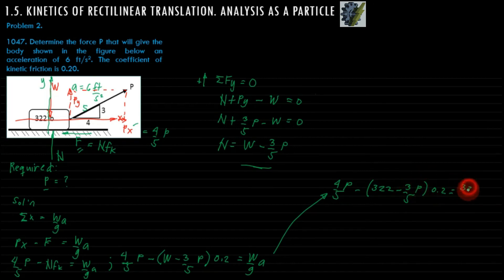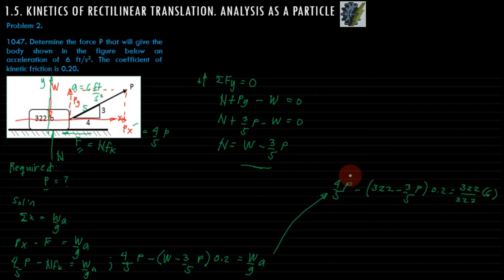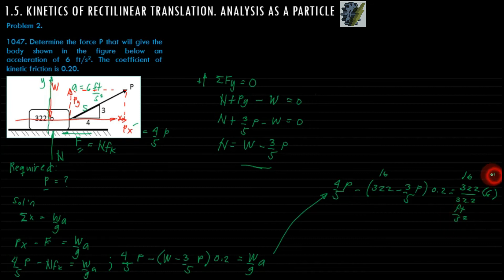This equals W over g times a, which is 322 over 32.2 multiplied by 6. Unit analysis: the weight terms are in pounds, and the inertia term is also in pounds, so the units are consistent and cancel correctly, leaving pounds as the resulting unit.